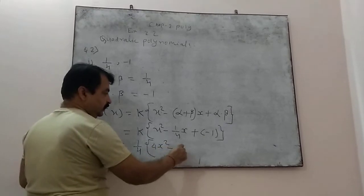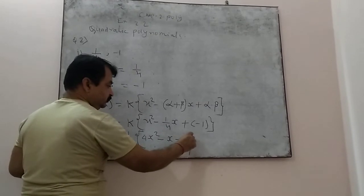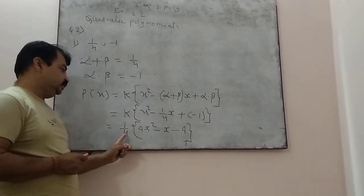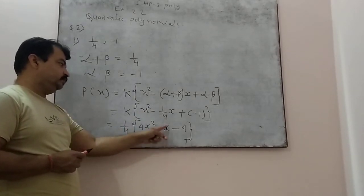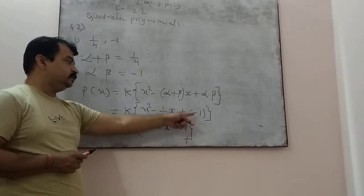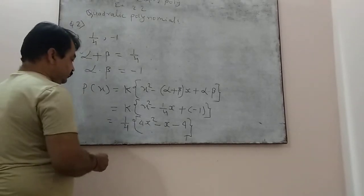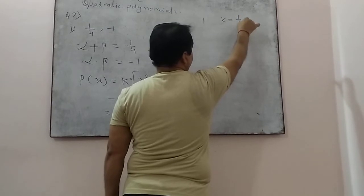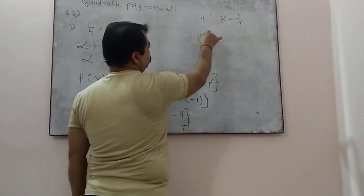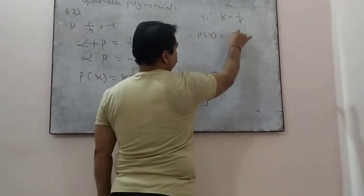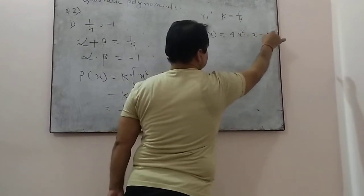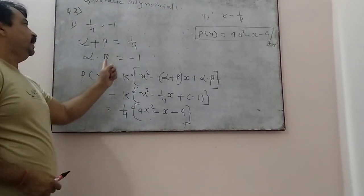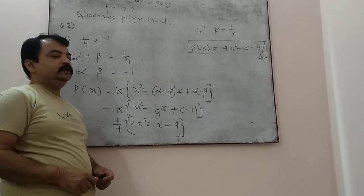It becomes 4x squared minus x plus of minus 4. When you open the bracket: 1/4 into 4x squared gives x squared; 1/4 into x gives 1/4x; and 1/4 into minus 4 gives minus 1 — so the value is unchanged. Since k is equal to 1/4, the required polynomial is 4x squared minus x minus 4. This is the required polynomial for the given sum of zeros and product of zeros.